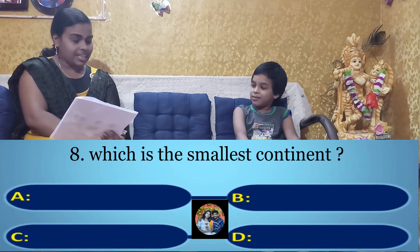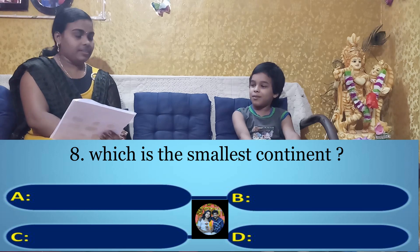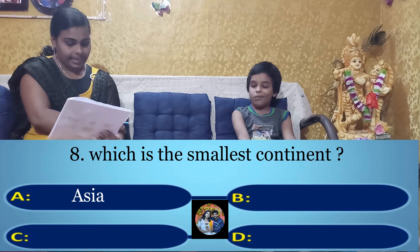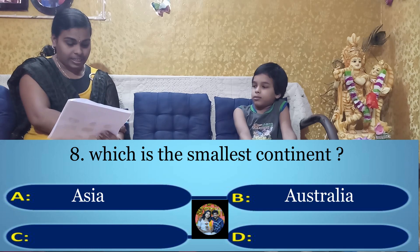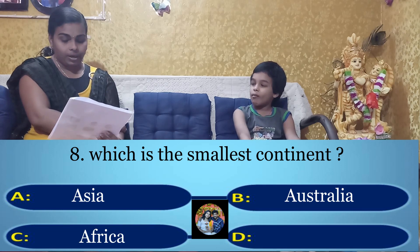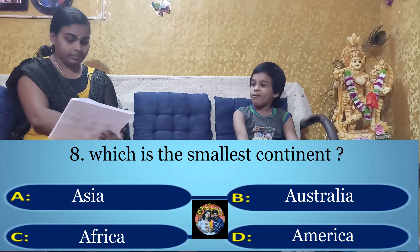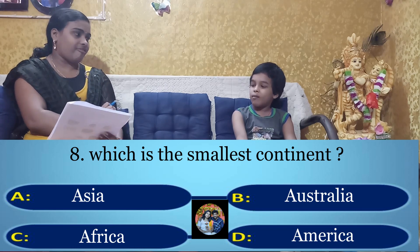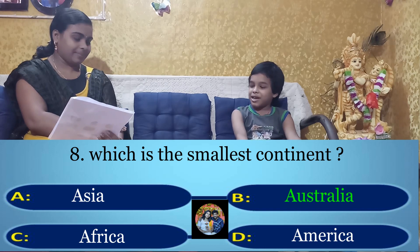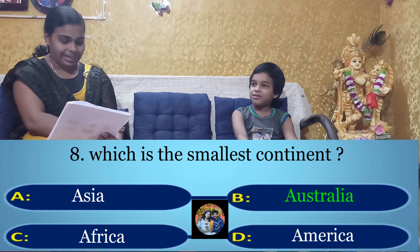Your eighth question: Which is the smallest continent? Option A: Asia, Option B: Australia, Option C: Africa, Option D: America. Your time starts now. Australia. Yes, the right answer is Option B: Australia.